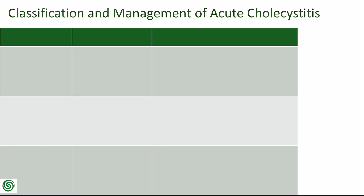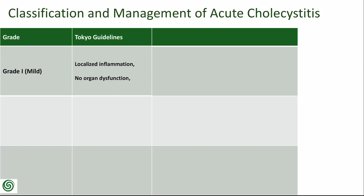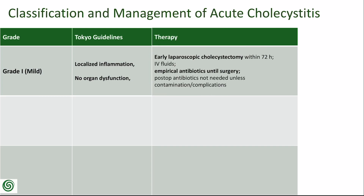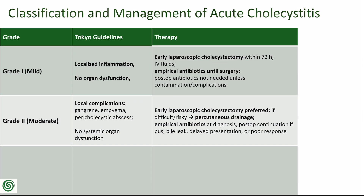The Tokyo Guidelines of 2018 classify acute cholecystitis into three grades based on severity. This classification helps determine the urgency of treatment and the level of care required. Grade 1 (mild) is characterized by localized inflammation without organ dysfunction; the recommended treatment is early laparoscopic cholecystectomy, ideally within 72 hours of symptom onset. Grade 2 (moderate) involves local complications such as gangrene, empyema, or pericholecystic abscess, and early surgery is also preferred.